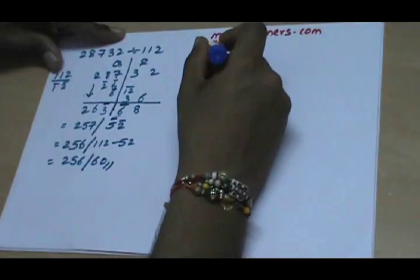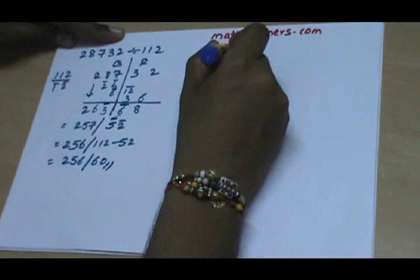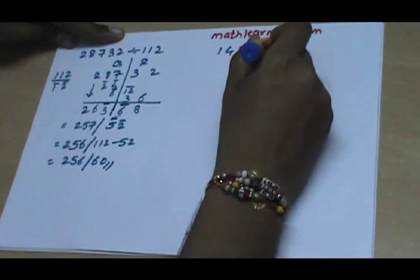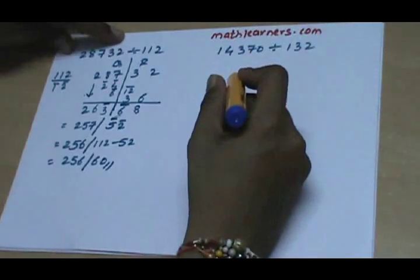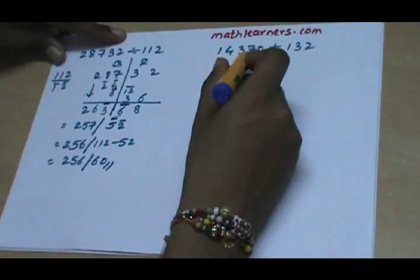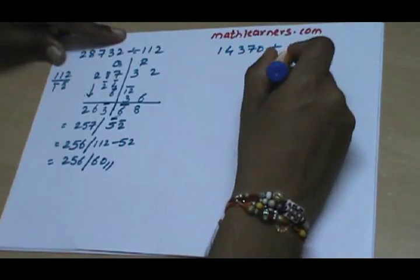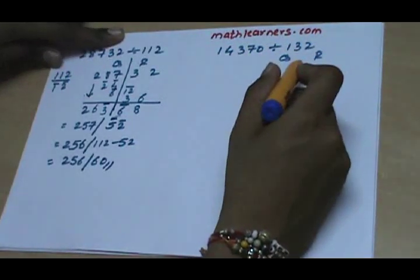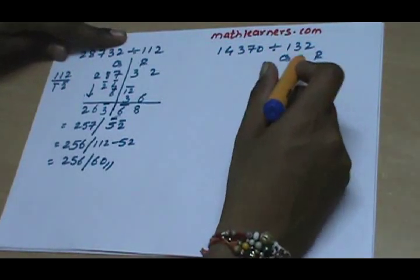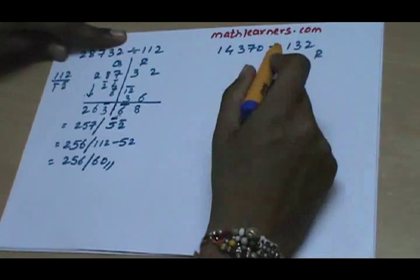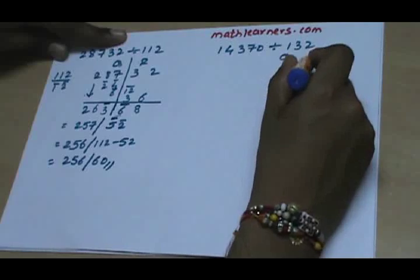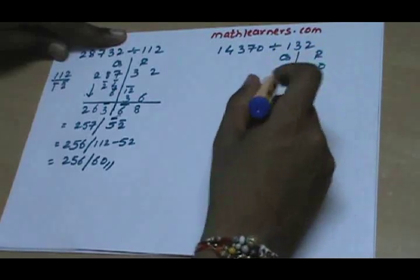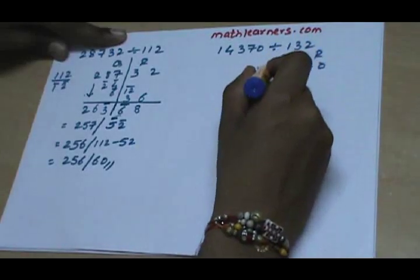Let's take another problem. Suppose we want to divide 14370 by 132. So we split dividend into two parts, quotient and remainder, such that remainder will have one less digit than that of divisor. As divisor is having 3 digits, remainder will have two digits. So 70 will be present in remainder and quotient will have 143.